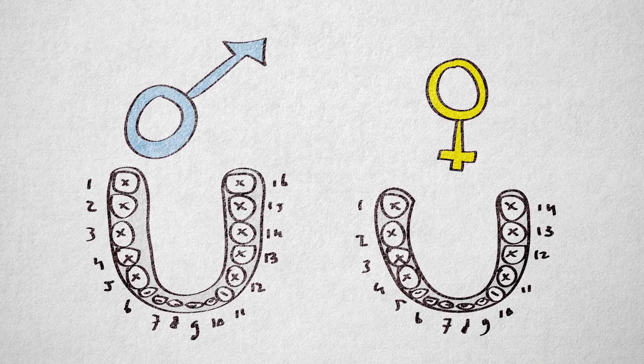For example, he thought, based on his observations, that insects have four legs and that men have more teeth than women.